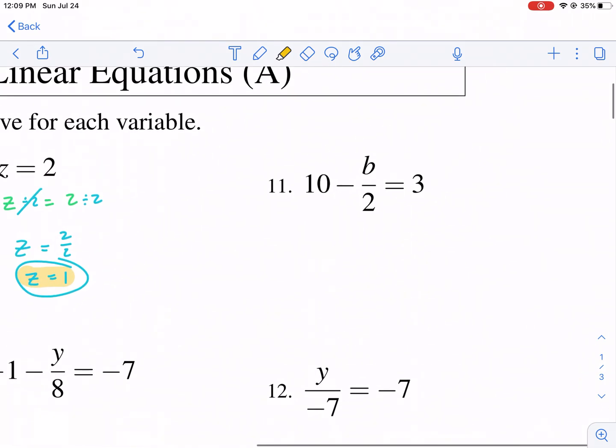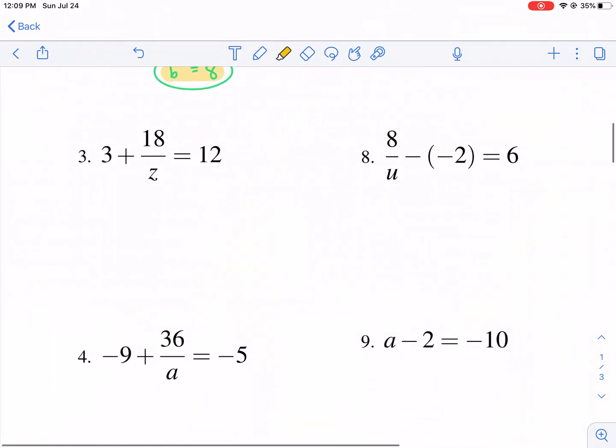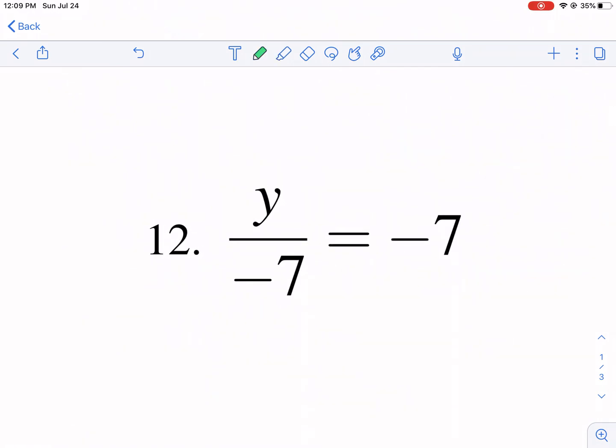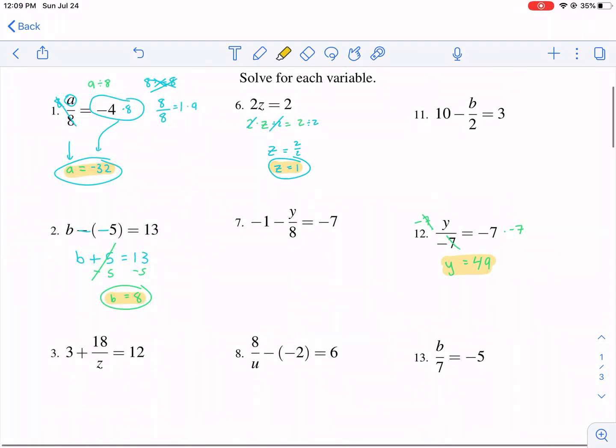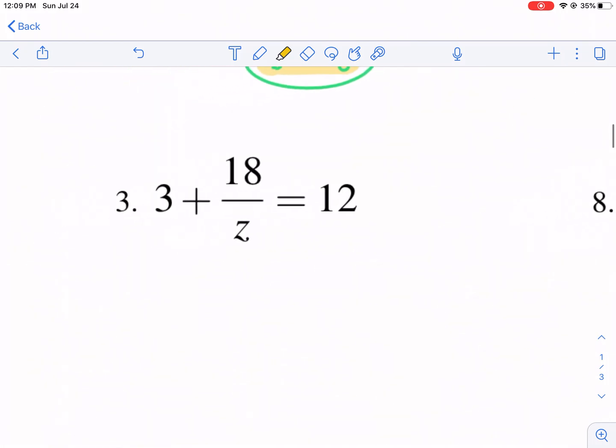Now let's get into some two-step equations. We have another one step here, so let's do this one real fast. We have y divided by negative 7, so we want to do the opposite, which is multiply by negative 7. Don't just multiply by positive 7. You want to multiply by the number that's listed here. So it cancels out. We have y equals negative 7 times negative 7, positive 49. There's our answer.